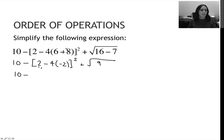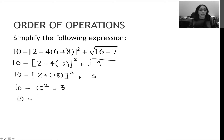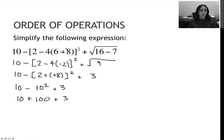I still can't deal with the 10 because I have more to resolve inside the parentheses. Within them, I must multiply 4 times negative 2 before subtracting: 4 times negative 2 is negative 8. The square root of 9 is 3, so I deal with that on the outside. Then keep-flip-change: 2 plus 8 is 10, giving 10 squared inside. Now for exponents: 10 squared is 100. Finally, addition and subtraction left to right: 10 minus 100 is negative 90, plus 3 gives negative 87.